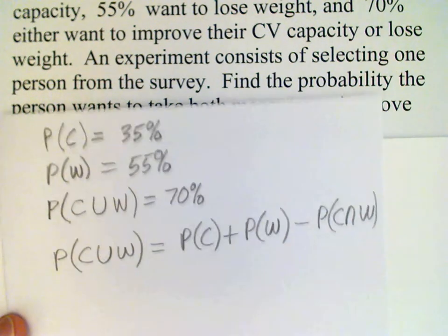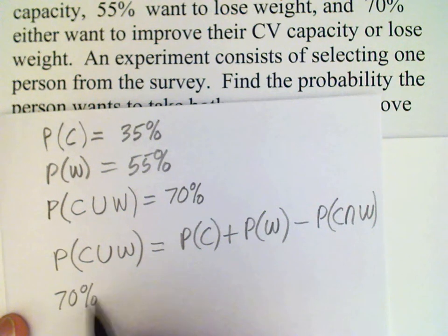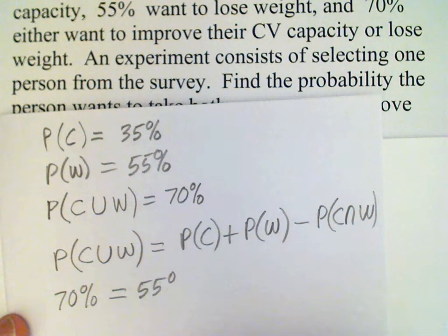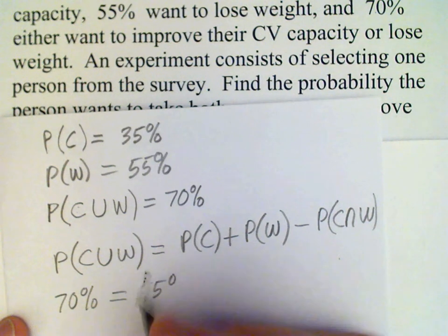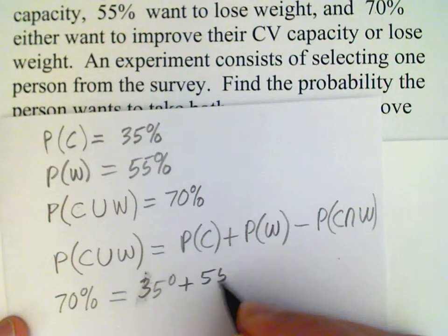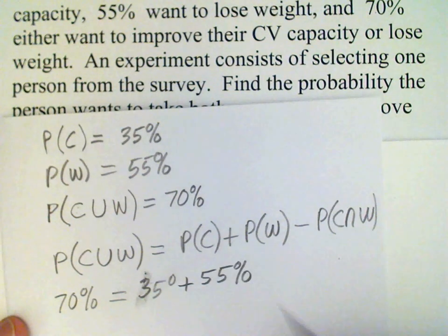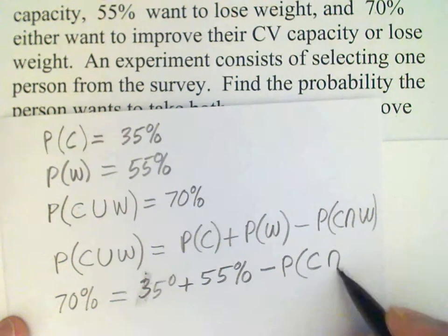So all I need to do then is substitute in the numbers. 70% is equal to—sorry, that should be 35% there for probability of C—and then plus 55% probability of W, and then minus the probability of C intersect W, which is what we're looking for.